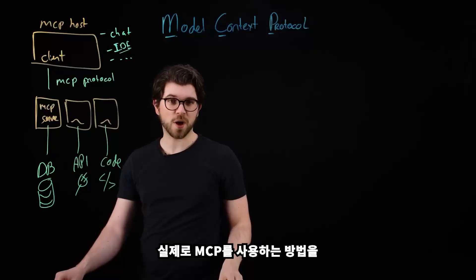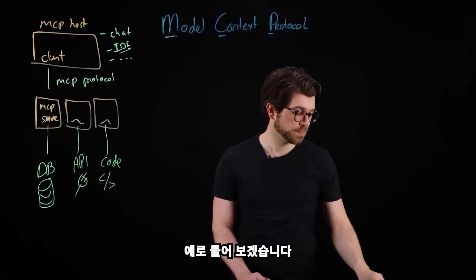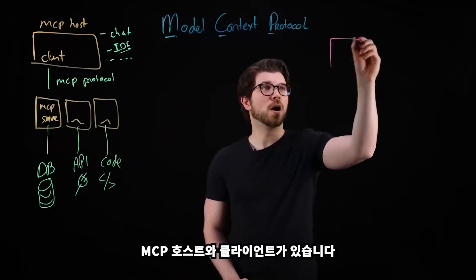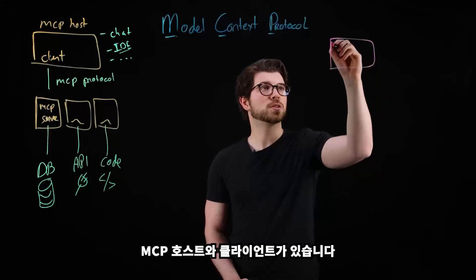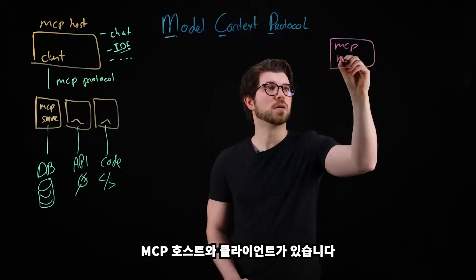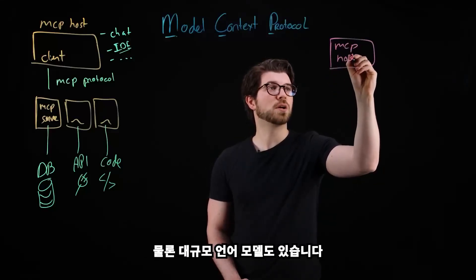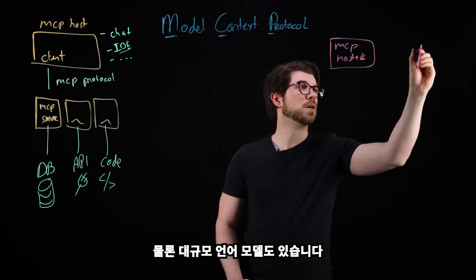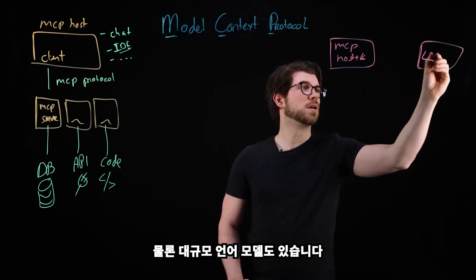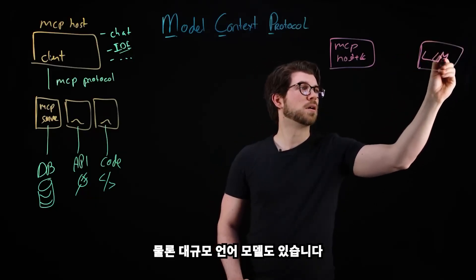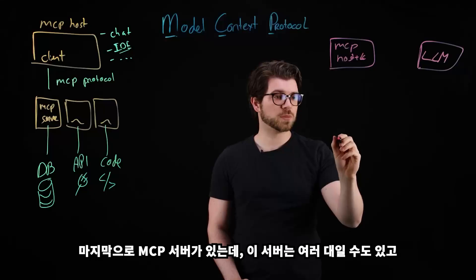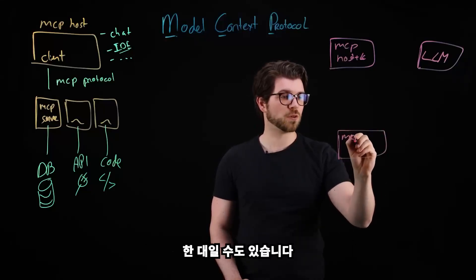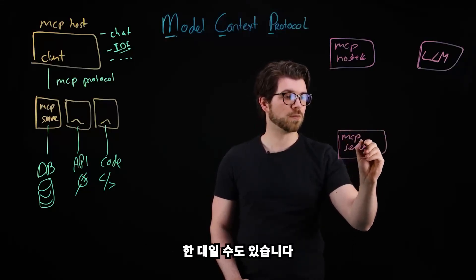Let's look at an example of how to use MCP in practice. We still have the three components: our MCP host and client, a large language model, and our MCP servers — which could be multiple servers or just a single one.